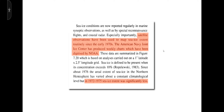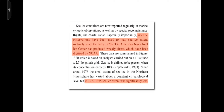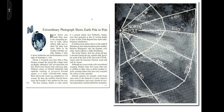Here's the accompanying text from the 1990 IPCC report: 'Satellite observations have been used to map sea ice extent routinely since the early 1970s. The American Navy Joint Ice Centers produced weekly charts which have been digitized by NOAA.' And the key sentence: 'In 1972 to 1975, sea ice extent was significantly less.' So they hid the data before 1979 and tried to use the excuse that there was no satellite data prior to 1979, but the IPCC report said the exact opposite. Satellite observations have been used since the early 1970s. This shouldn't surprise anyone because we went to the moon in 1969 — we actually have satellite data from even earlier than that.